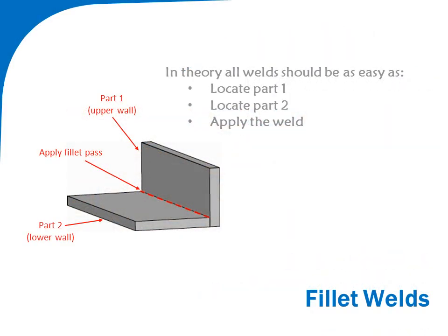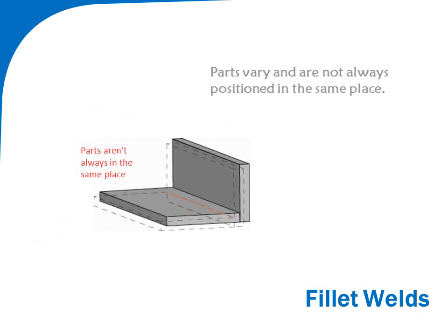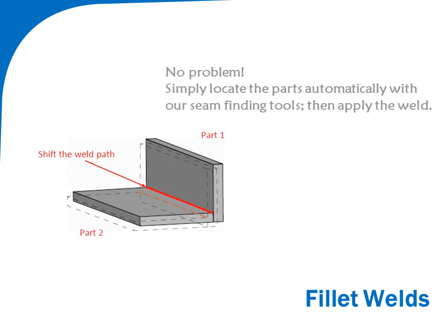A fillet weld is the most common joint type. Locating the upper and lower walls, or parts, allows us to determine the optimal location of the weld seam. Parts aren't always consistent in quality or presented in the same location, making it difficult to locate the weld seam. Using our seam finding tools, it's easy to locate the upper and lower parts and adjust the seam location as parts shift.